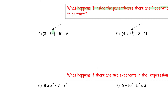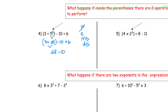Let's take a look at number four. The first thing I'm going to do is solve my parentheses — but inside my parentheses I have an exponent, so I want to solve that first. Five to the second power is 25. Then I have three plus 25 — bring that down — minus 10 plus six. I had to solve the exponent inside first. Now I'm going to solve the actual parentheses, which gives me 28 minus 10 plus six.